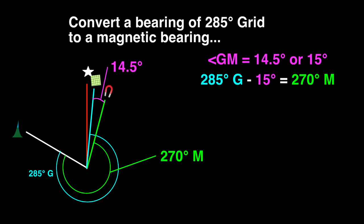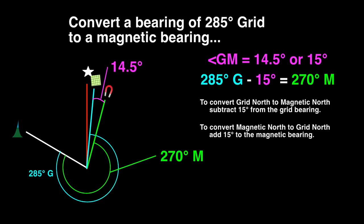Now let's make our shortcut rules for this situation. To convert grid north to magnetic north, subtract 15 degrees from the grid bearing. To convert magnetic north to grid north, add 15 degrees to the magnetic bearing.